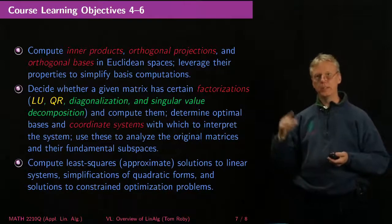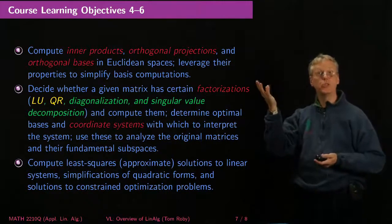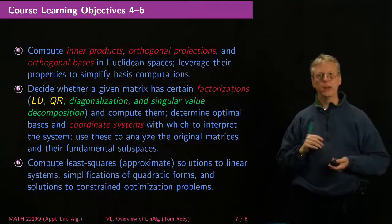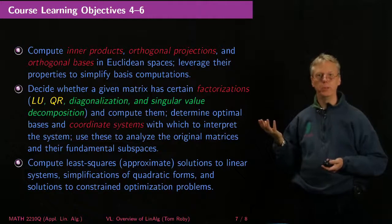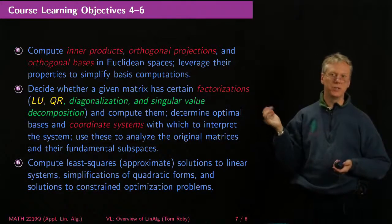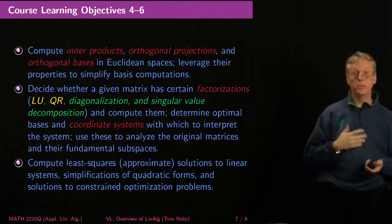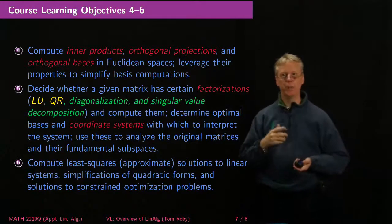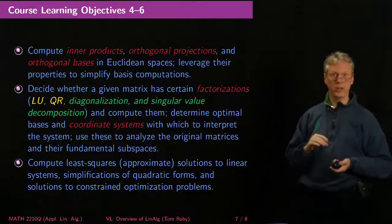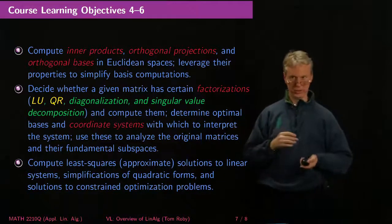Four, five, and six. So in four we're leveraging the geometry, the inner product spaces as I mentioned earlier. Learning outcome five is that I hope you'll be able to, you'll decide whether, know how to decide whether a matrix has certain factorizations that are useful and be able to compute them, determine optimal coordinate systems, understand situations, and use these to analyze the original situations that you're handed.